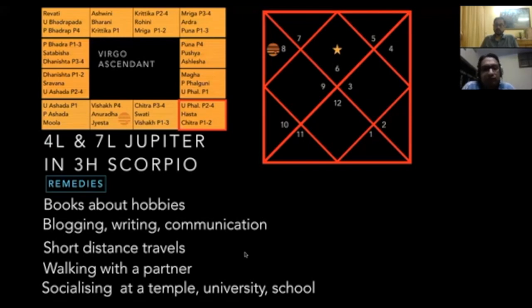So you might be moving to a new location for work related purpose or for business related purpose, because Jupiter rules the fourth and the seventh. So definitely those areas will have an impact for Virgo.